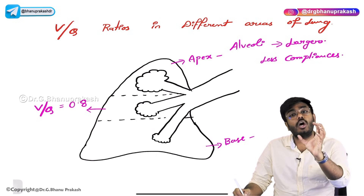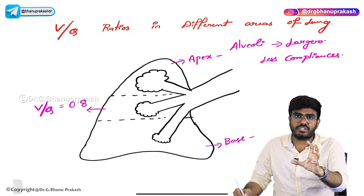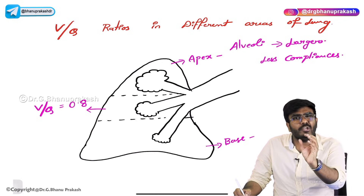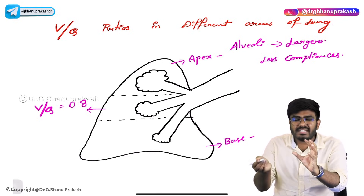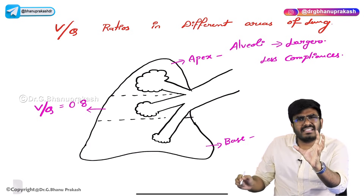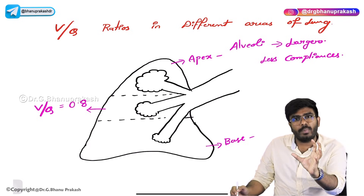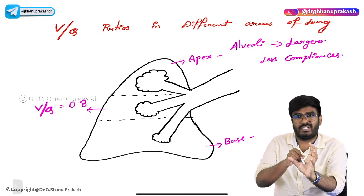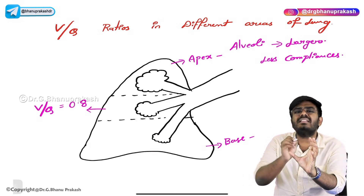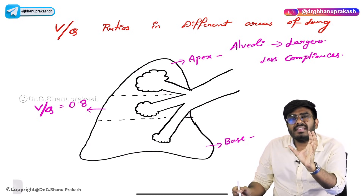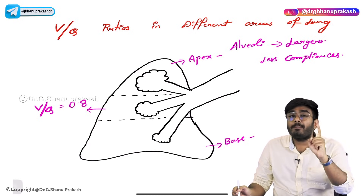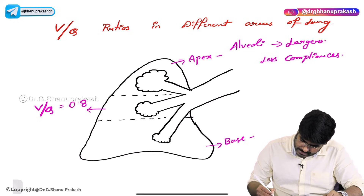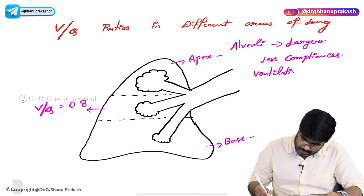Why are they less compliant? Because already they are open and already stretched, you can't further stretch them. So very less air is going into them — they are already open with some air already there. You cannot put extra air into it. So ventilation in the apex of the lung is less. There is no doubt — ventilation is less in the apex.